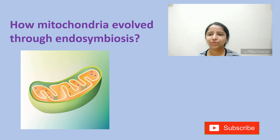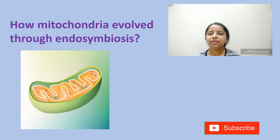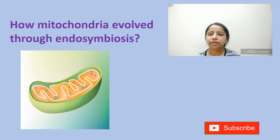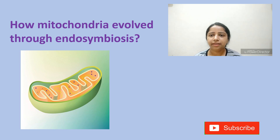Hi friends, this is Dr. Komal and welcome to KC Science Talks. In this lecture we will talk about how mitochondria evolved through endosymbiosis. We will start with the conditions on the primitive earth and will discuss the changes in the earth's atmosphere which led to the origin of mitochondria through endosymbiosis. So let's start the lecture.